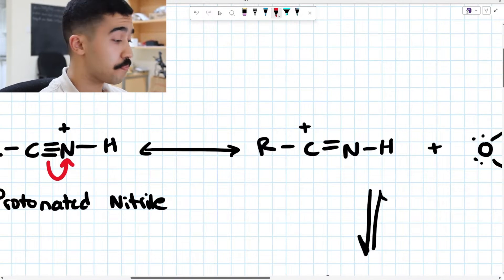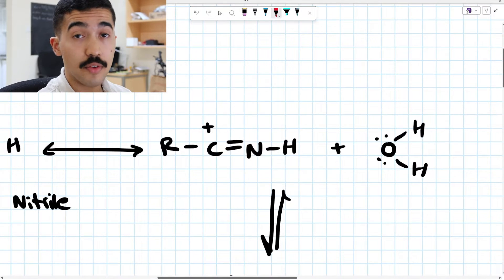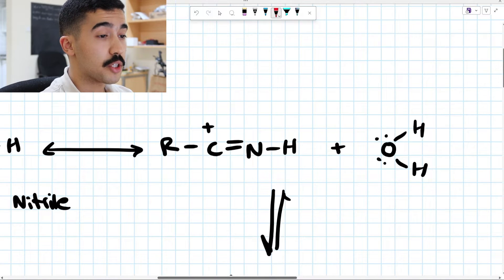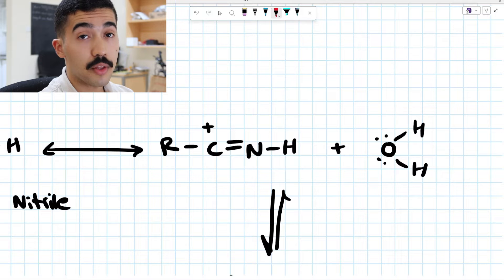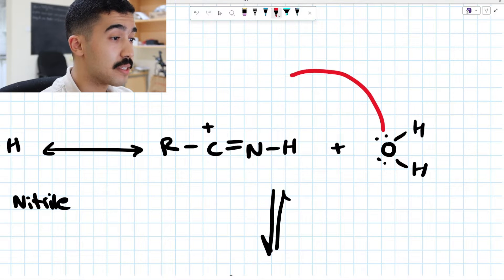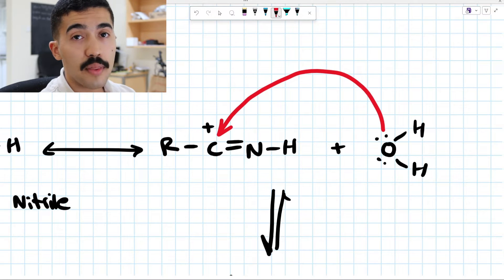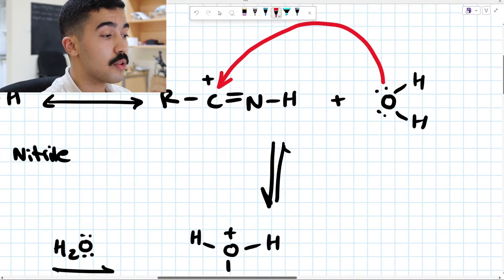Now what's going to happen is H2O, which we just made in the previous step, is going to come in and play this reaction. The lone pairs from oxygen, either one, doesn't really matter, is going to come in and attack this carbocation. When that happens, you're going to form the following.